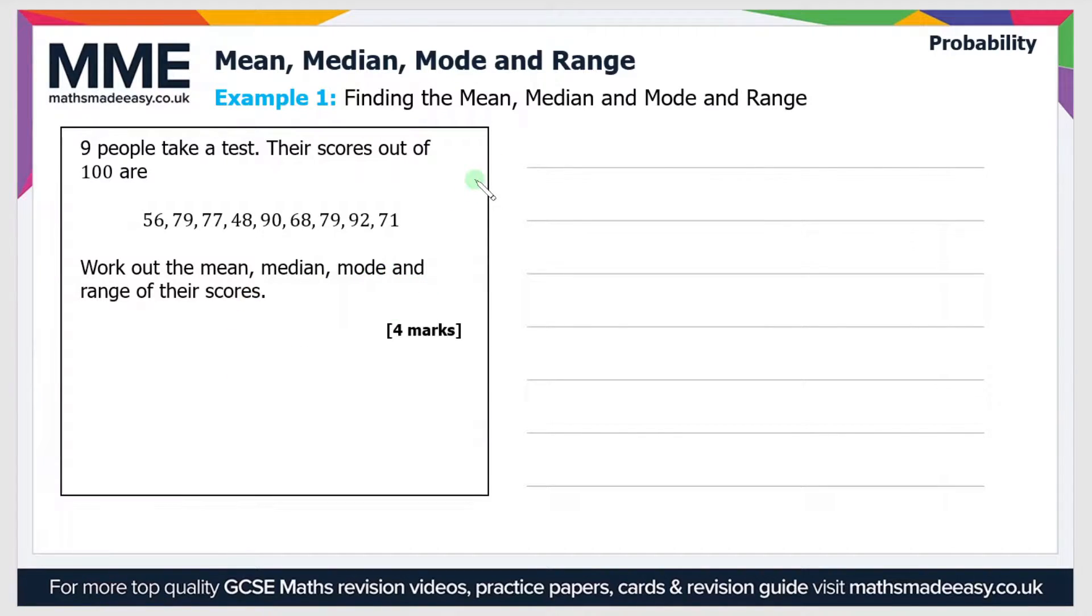Well the first thing we should do is put all of these numbers in order. So if you do that you should get the order as 48, 56, 68, 71, 77, 79, 79 again, 90 and 92.